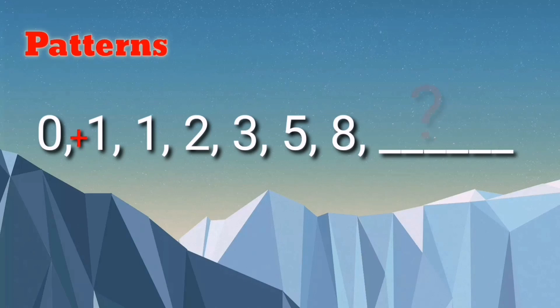That's zero plus one is one, one plus two is three, two plus three is five, three plus five is eight. So what is the next term? The answer is 13. That's five plus eight equals 13. Very good.